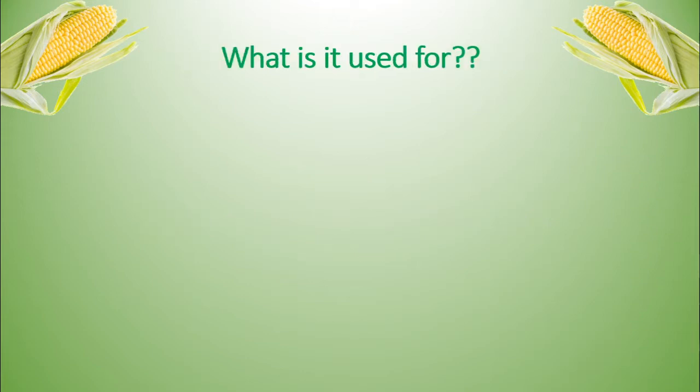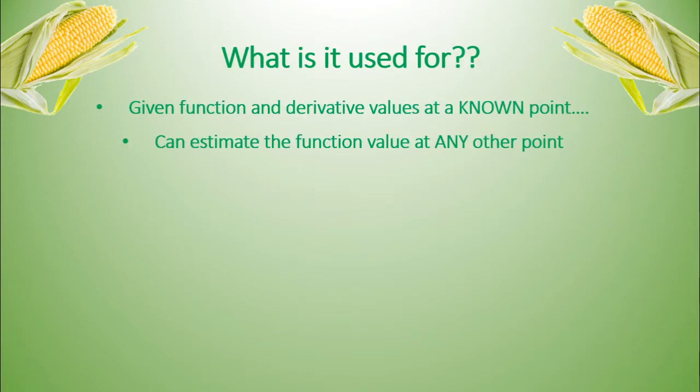So let's start with what Taylor series is used for. The point of a Taylor series is that given a function, whatever function that may be, if we know its value at a certain point, say at 1, and we know its derivatives at that point, then we can estimate that function value at any other point. So if we know all its values at, say, 1, then we can estimate it at 2 or 3 or 5, given some certain constraints, of course.